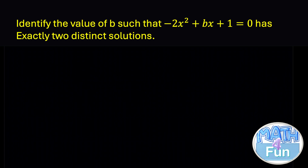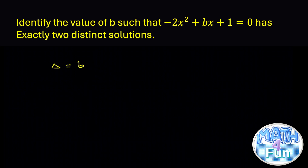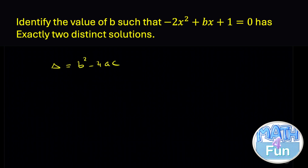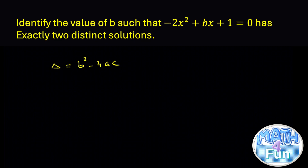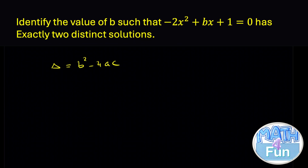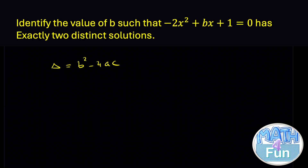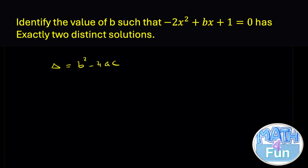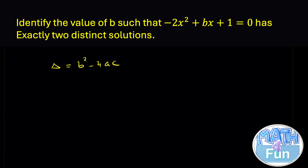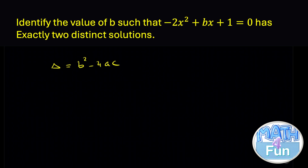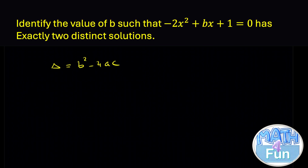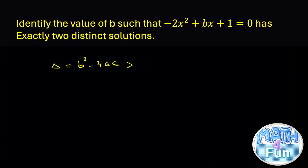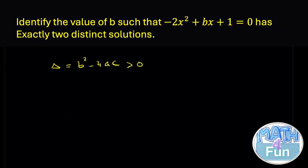The discriminant delta equals b² - 4ac. When delta is greater than 0, we have two distinct real solutions. When delta is negative, we have no real solutions, and when delta equals 0, we have one repeated solution. So in this case we need delta to be greater than 0.